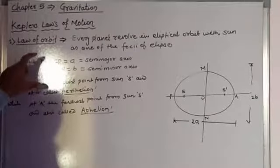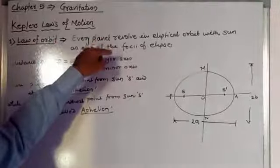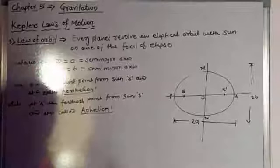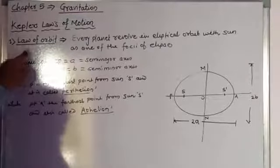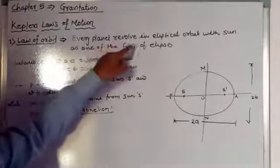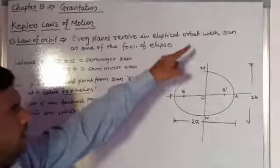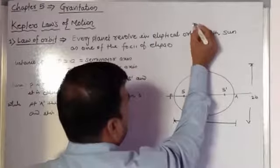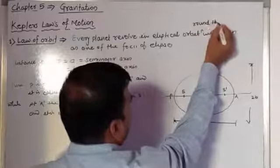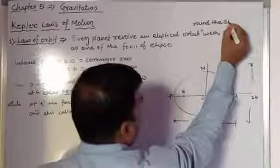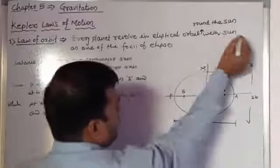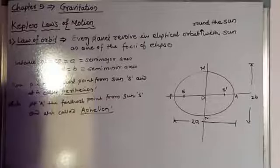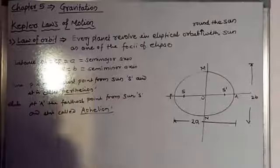This is the first law of Kepler's laws of planetary motion, also called the law of orbit. To repeat: the law of orbit states that every planet revolves in an elliptical orbit around the sun, with the sun as one of the foci of the ellipse.